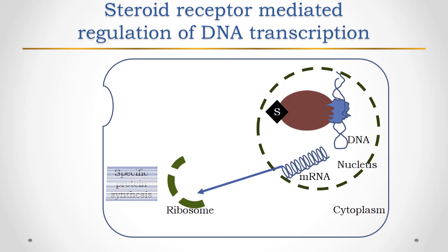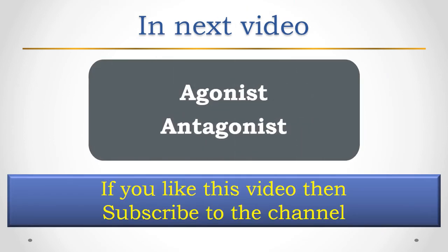The mRNA then directs the production of specific proteins at the ribosomes, required for the distinct physiological function. In this way, cytosolic receptors through the agonist produce their actions inside the cell. In our next video, we will discuss about agonists and various types of agonists.